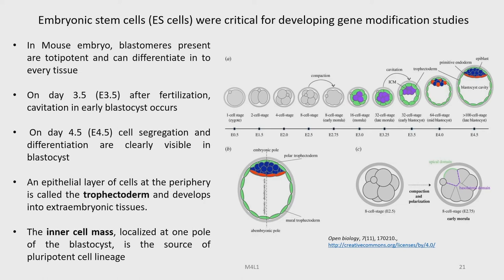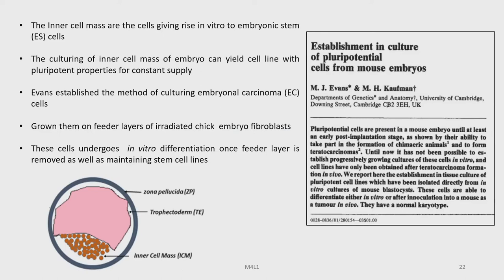An epithelial layer of cells at the periphery is called the trophectoderm and develops into extra-embryonic tissue. The inner cell mass is localized at one pole of the blastocyte and is the source of the pluripotent cell lineage. These inner cell mass cells give rise to in vitro embryonic stem cells.